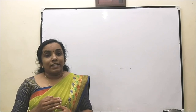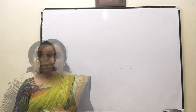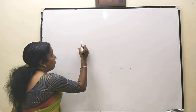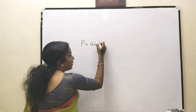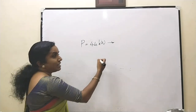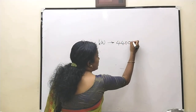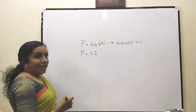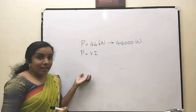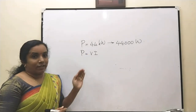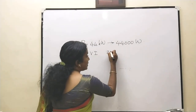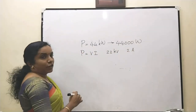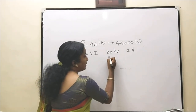In a power generating station, current is produced at a power of 44 kV, meaning 44,000 volts. We all know power is a product of voltage and current, so we can generate current at any desired voltage — for example, 22 kV at 2 amperes gives 44 kW, or it can be 11 kV and 4 amperes.